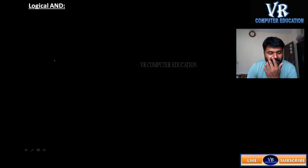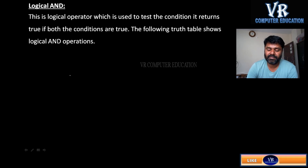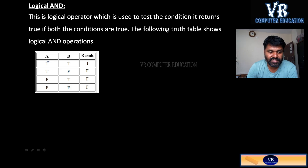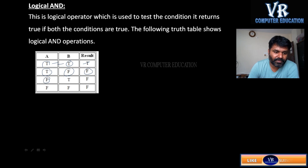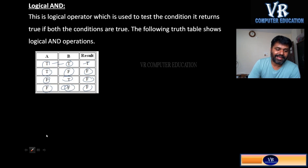Logical AND gives the result as true only when both conditions are true. See the truth table: when both conditions are true, the result is true. When the first is true and the next is false, the result is false — because logical AND gives true only when both are true and true. False and true gives false; both false gives false obviously.